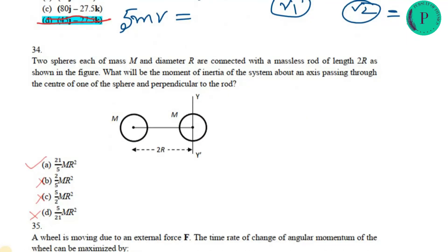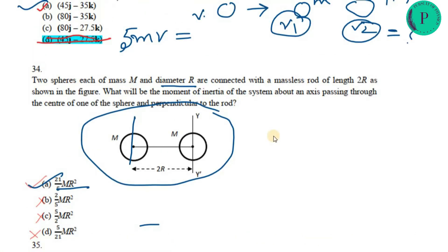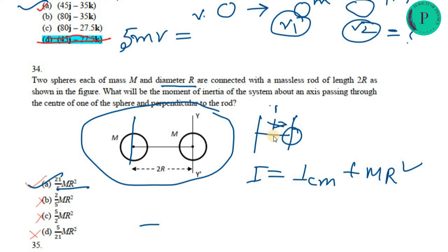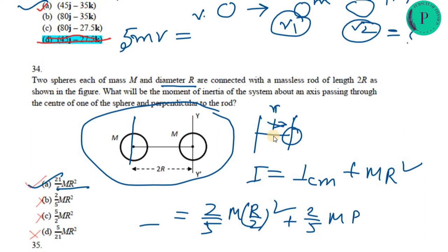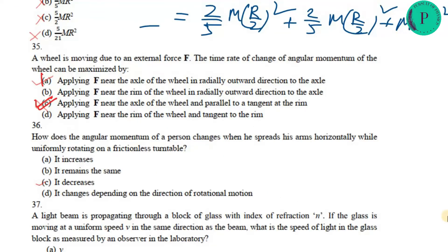The next question gives two spheres separated by a distance of 2r, each with diameter r (so radius r/2). Using the parallel axis theorem, the moment of inertia about the system's axis is I = Icm + md². For each sphere, Icm = (2/5)m(r/2)². Adding the offset term m(2r)² for each sphere and combining both gives the total moment of inertia. Option A is the answer.